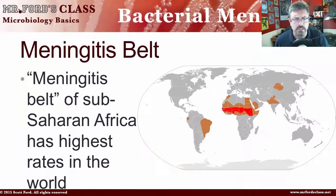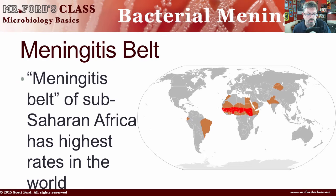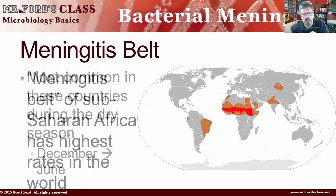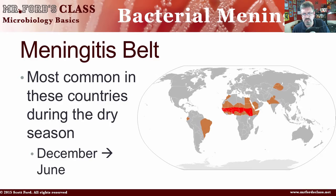Speaking of other countries, we have something called the meningitis belt. The meningitis belt is part of sub-Saharan Africa, and this has the highest rate of meningitis in the world. This is where the disease is most common, and you find it most common during the dry seasons, during December through June. The dry season makes you more susceptible to the infection at that point in time.